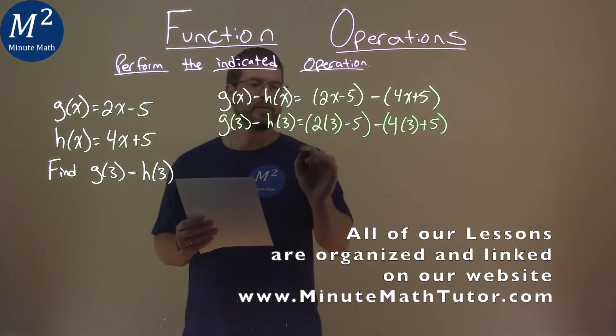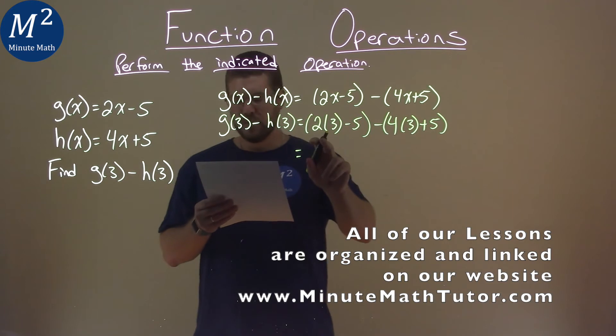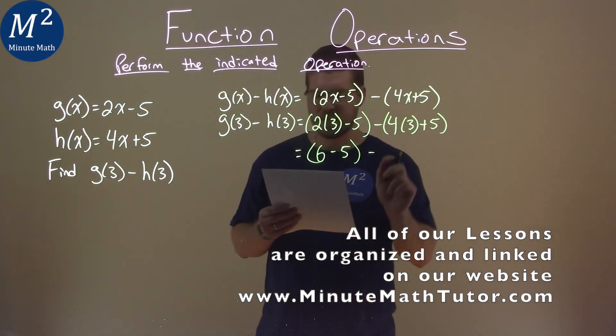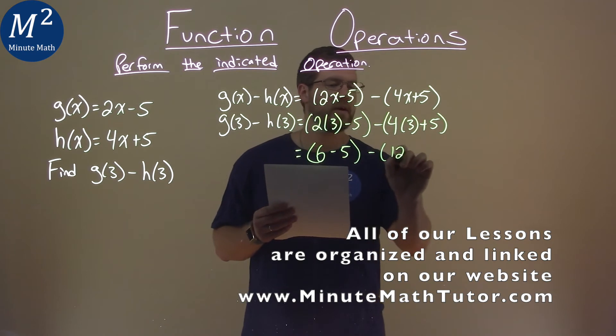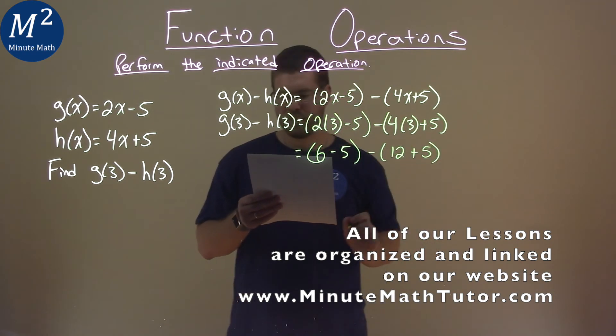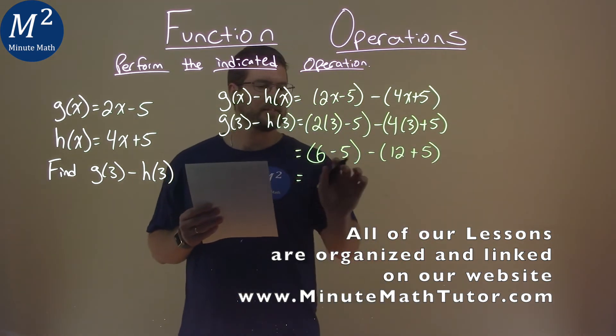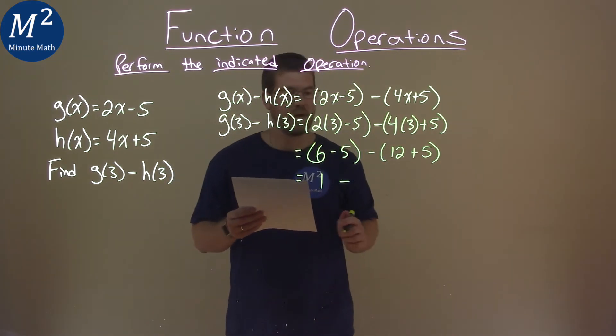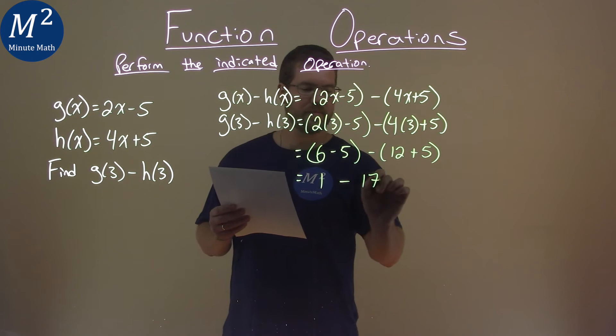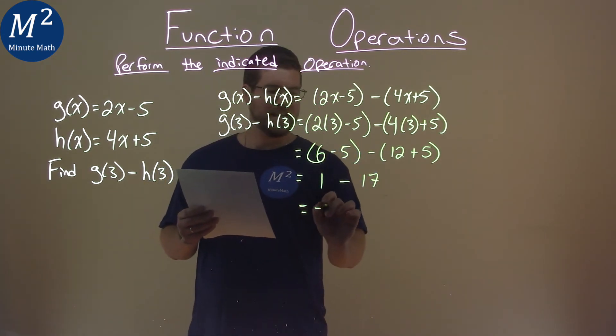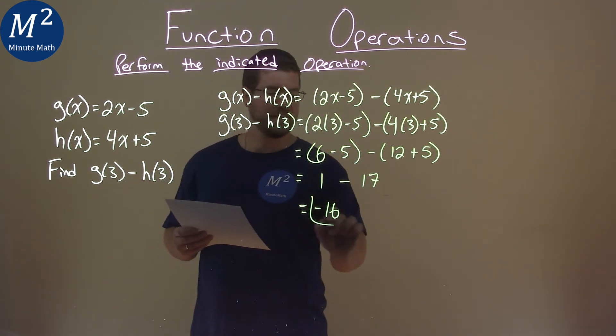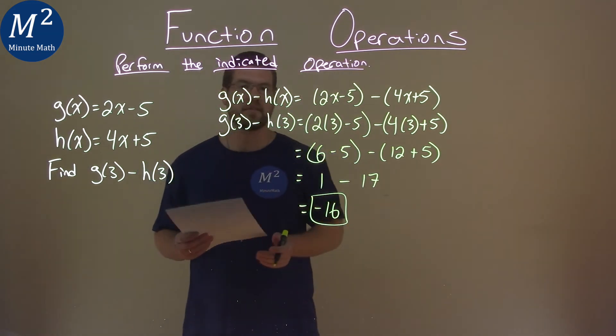And so now, let's solve this. 2 times 3 is 6, and 6 minus 5 here, and 4 times 3 is 12. And don't forget the plus 5. Keep going down. 6 minus 5 is 1, and 12 plus 5 is 17. 1 minus 17 is negative 16. And so our final answer here is just negative 16.